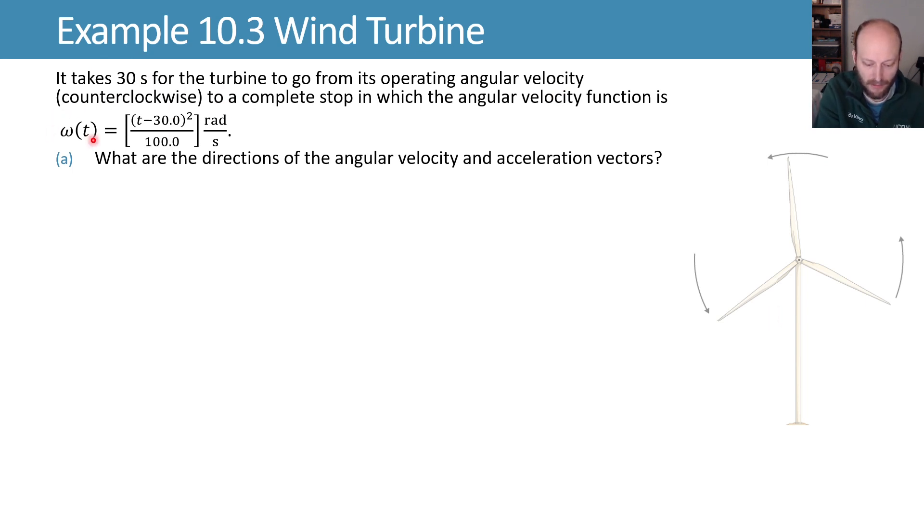The angular velocity function is ω(t) = (t-30)²/100, which gives us units of radians per second.